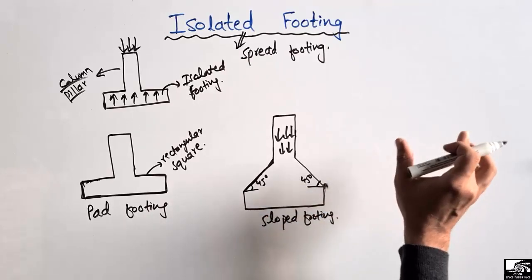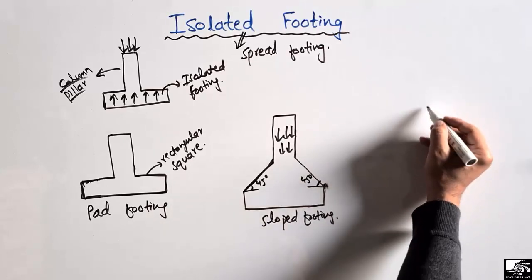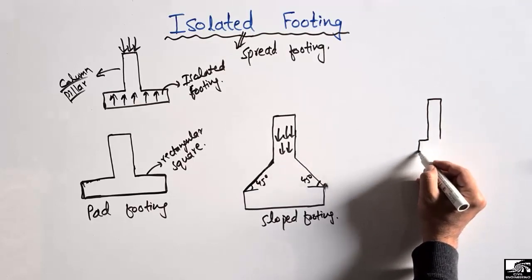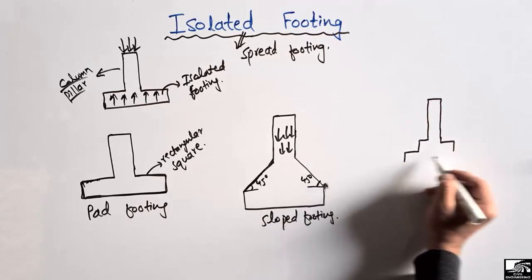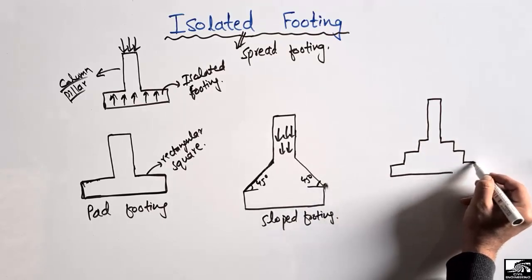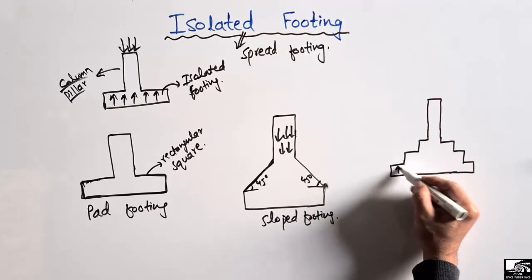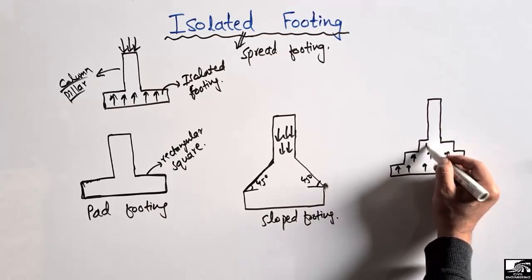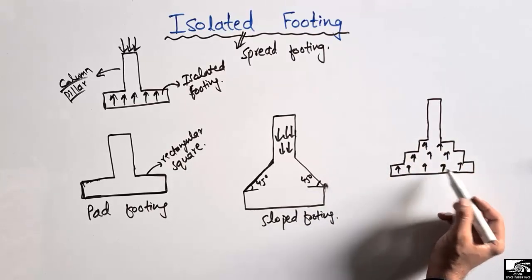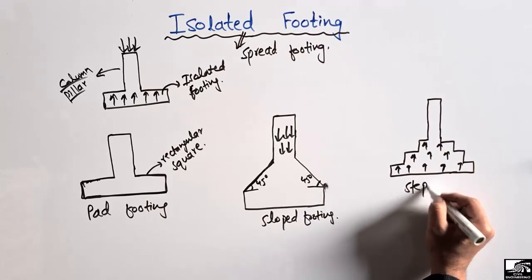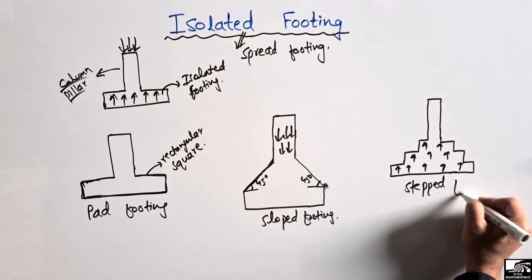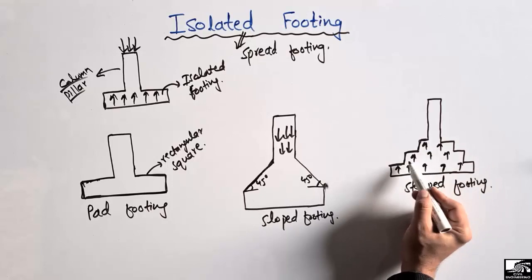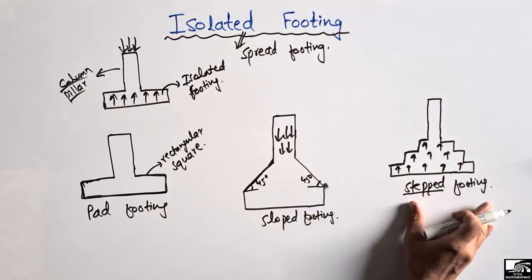The last type of isolated footing is the stepped footing. In this case, the footing is divided into many steps — the larger portion is at the bottom and it decreases in size going upward. Such type of footing is called the stepped footing because it is stepped in shape. If you look at that shape, it is like a staircase.